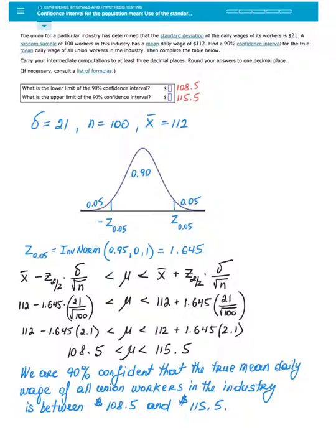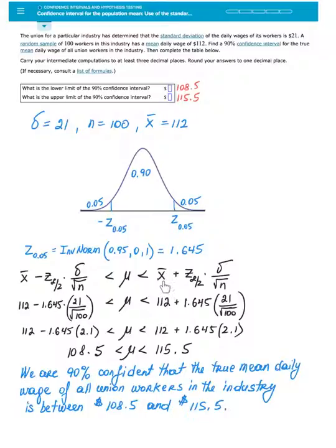So I have a compound inequality which says: sample mean X̄ minus Z sub alpha over 2 multiplied by sigma over square root of n is less than the true mean mu, which in turn is less than sample mean X̄ plus Z sub alpha over 2 multiplied by sigma over square root of n. Inputting everything we know: 112 minus 1.645 times 21 divided by square root of 100, less than mu, less than 112 plus 1.645 times 21 over square root of 100.